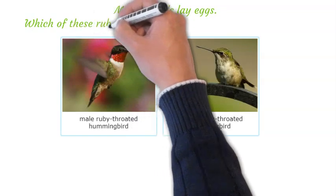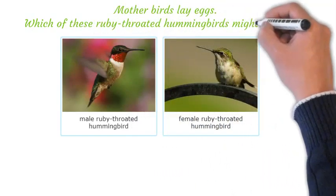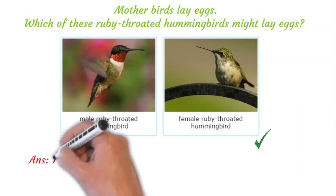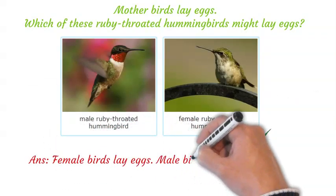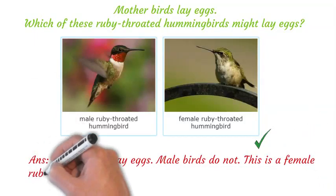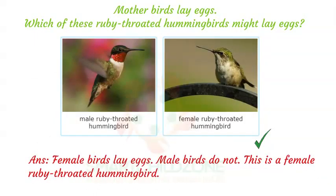Mother birds lay eggs. Which of these ruby-throated hummingbirds might lay eggs? Female birds lay eggs, but male birds do not. This is a female ruby-throated hummingbird.